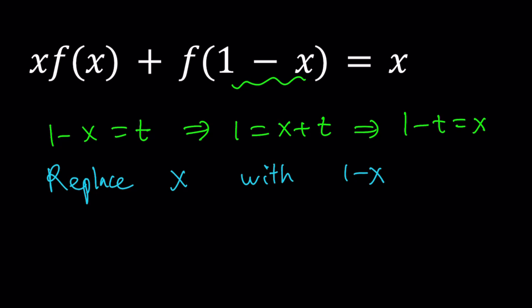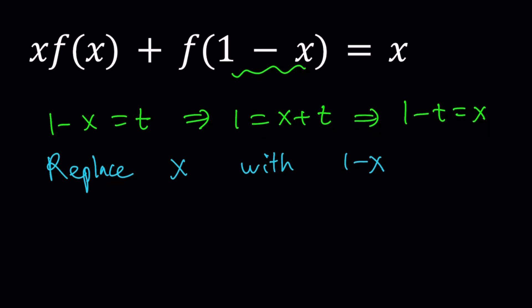It means we're going to replace x with 1 minus x. We don't have to use the same variable, we can replace 1 minus x with y or t or whatever, but this is more direct. That's why I like this approach. If you replace x with 1 minus x, it's equivalent to replacing 1 minus x with x. Remember that. Let's do it.